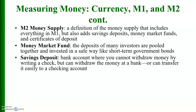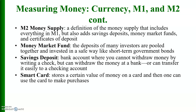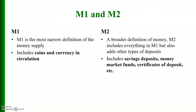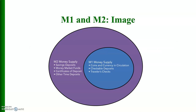A savings deposit is a bank account where you cannot withdraw money by writing a check, but can withdraw the money at a bank or transfer it easily to a checking account. A smart card stores a certain value of money on a card that one can use to make purchases. Time deposits are accounts that the depositor has committed to leaving in the bank for a certain period of time in exchange for a higher rate of interest — also called certificates of deposit. These are the definitions of M1 and M2.